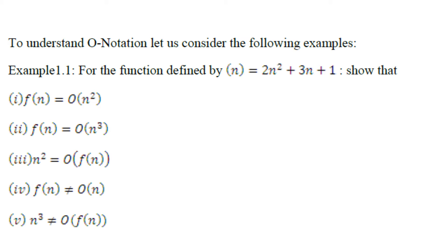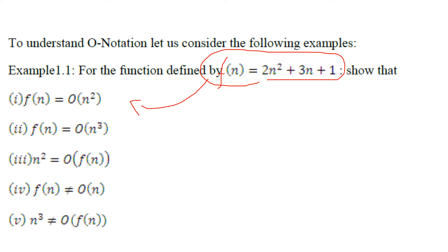Say for the function you have, f(n) is defined as 2n² + 3n + 1. The question asked here is: can you show that the growth rate of f(n) is equal to O(n²)? How do you represent that f(n) is equal to O(n²)?